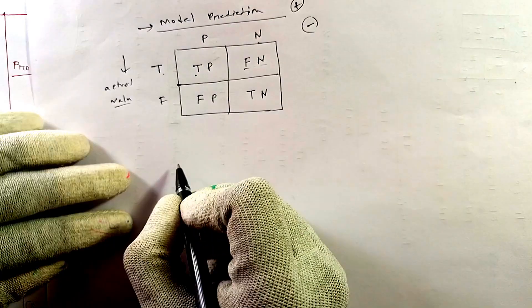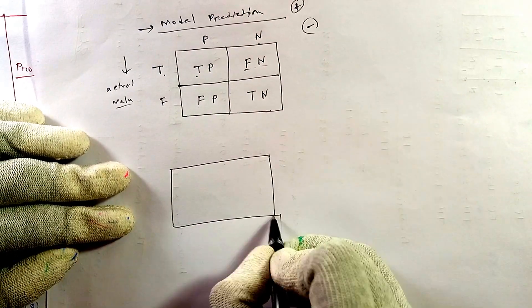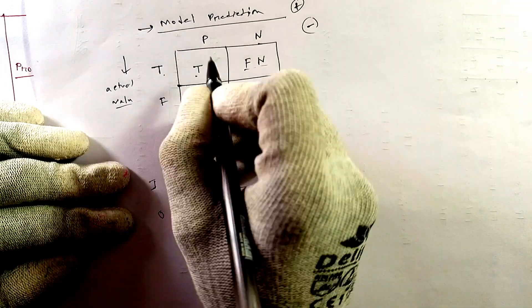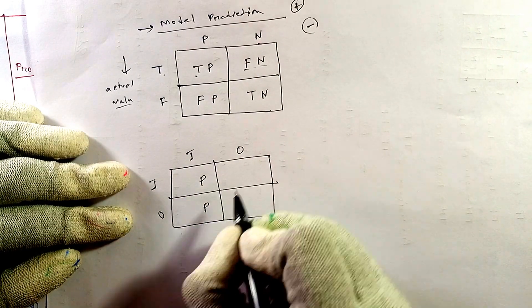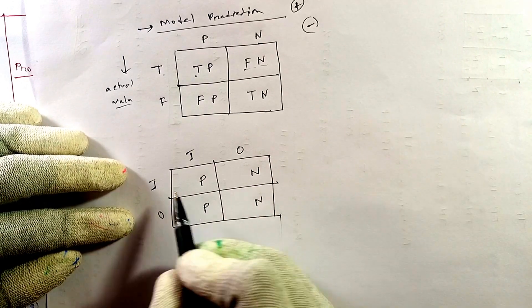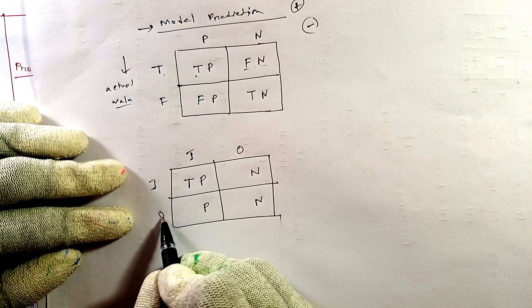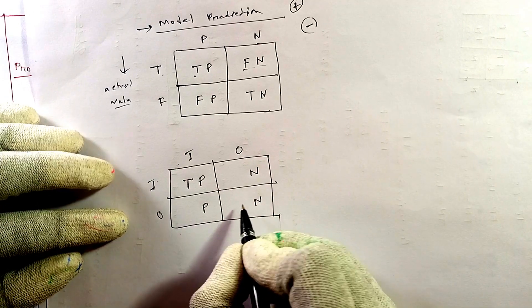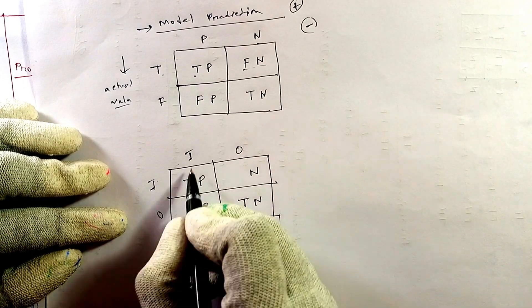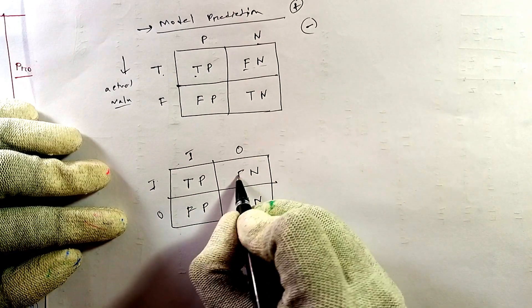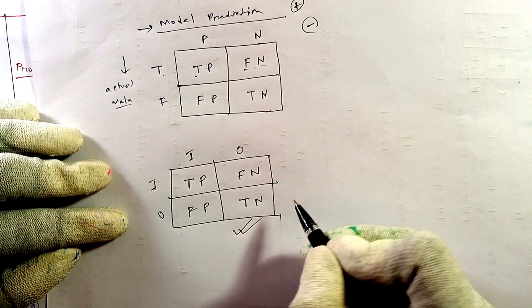For that reason, if we use zero and one it will be clearer. Suppose this is one and zero, one and zero. As per the previous table, we put P for positive and N for negative. Now think of it this way: if it is one and one — they are equal — put T. If it is zero and zero — equal — put T. If it is zero and one — not matching — put F. If it is one and zero — not matching — put F. This is better for understanding.